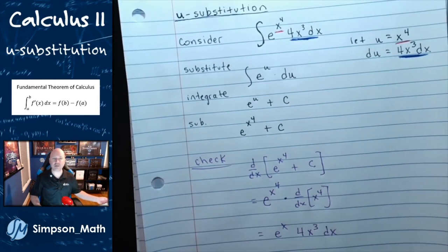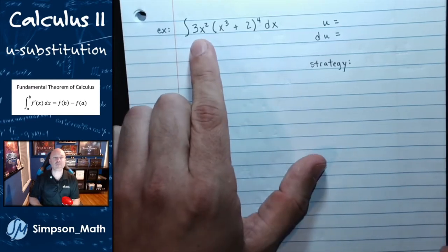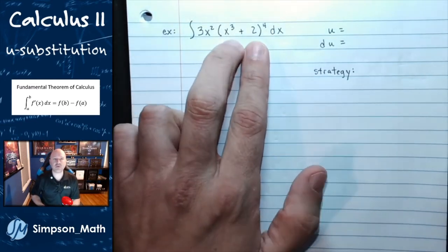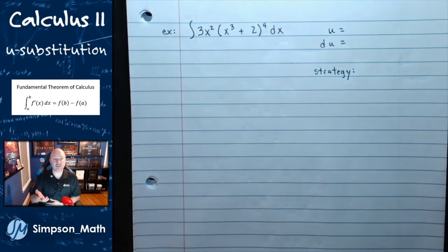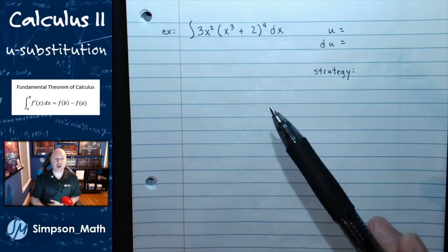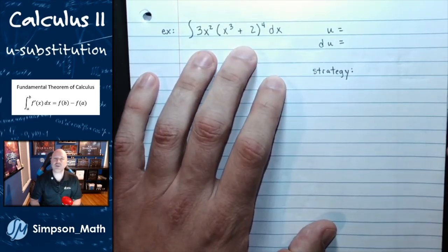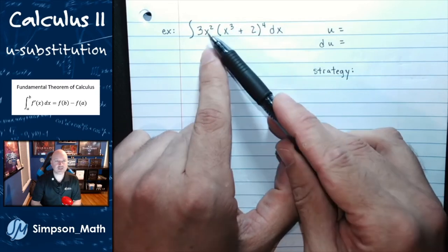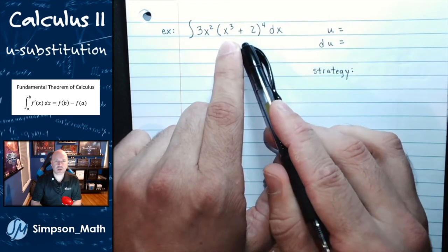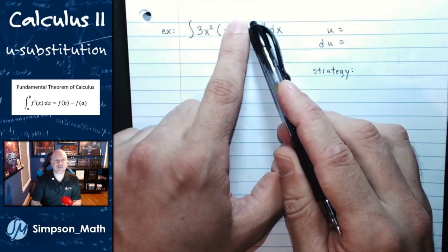Let's move on to another example: the integral of 3x squared times the binomial x cubed plus 2, raised to the fourth power, with respect to x. Feel free to pause and try this on your own. This falls under u-substitution — I'm looking for something I can differentiate whose derivative will be in the problem. I see a 3 and a 2, so if I let u be what's inside the parentheses, x cubed plus 2, then the derivative is 3x squared. That's perfect.